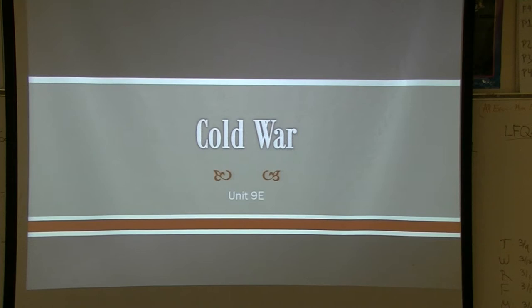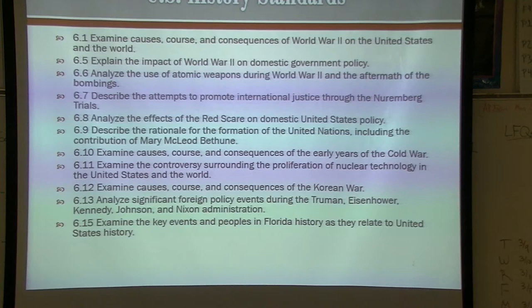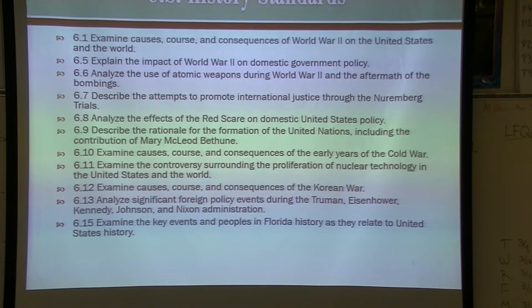This is our fifth and final section for Unit 9. We're going to cover the early part of the Cold War. We will come back to the Cold War when we get to Kennedy, then we have a section on Vietnam, a section for the Nixon presidency, and then the 80s and early 90s for the end of the Cold War. There are a lot of standards here, and historically we have a lot of questions on the EOC about this time period.